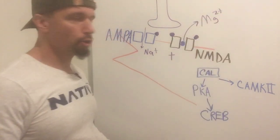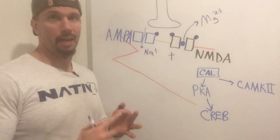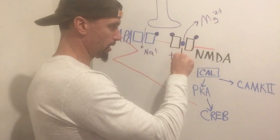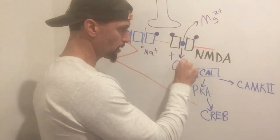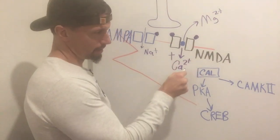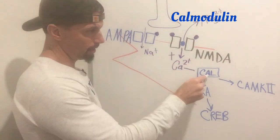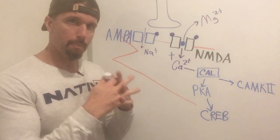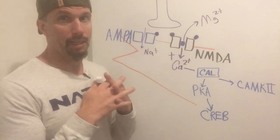Once the magnesium block is removed, two different ions enter through the NMDA channel: a little bit of sodium and a large amount of calcium. Calcium rushes in through the NMDA receptor and binds to a protein inside the cell called calmodulin, forming a complex.